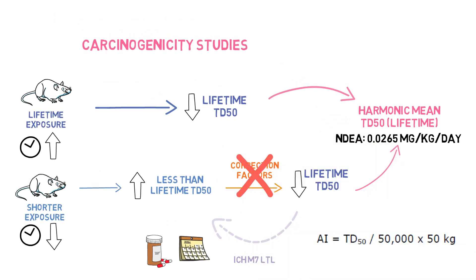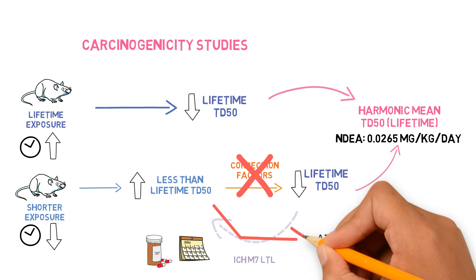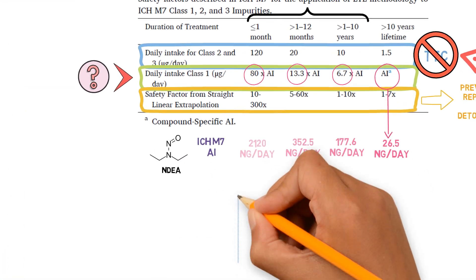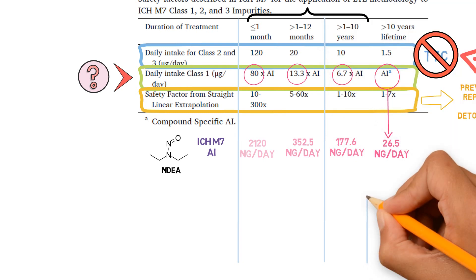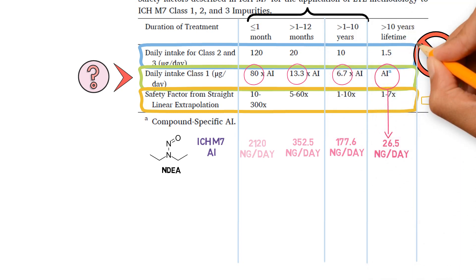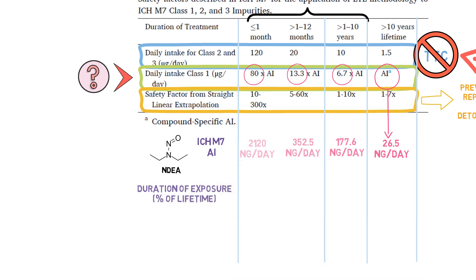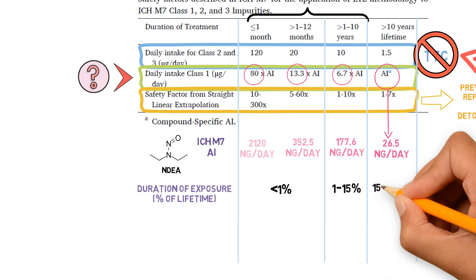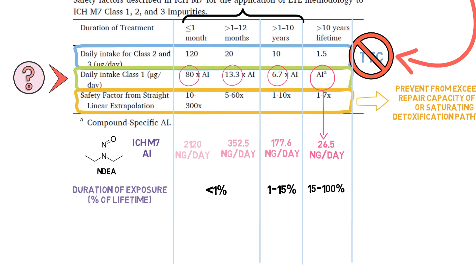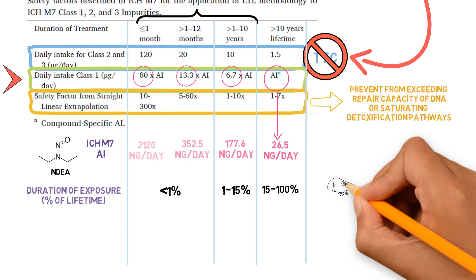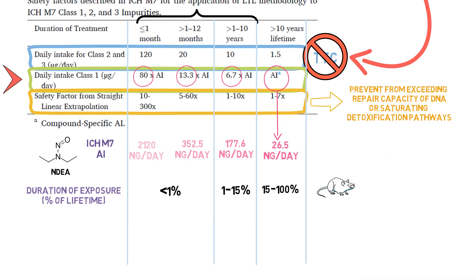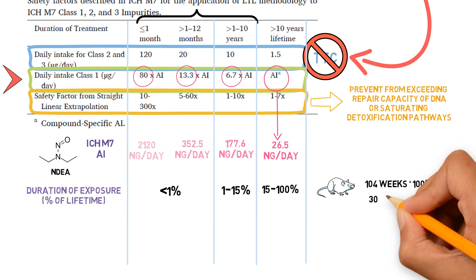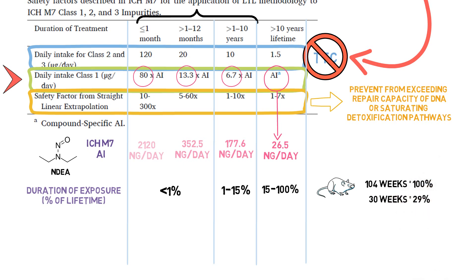What if we did not apply the correction factors and instead found the AI corresponding to each study which lasted less than a lifetime directly? This is what the authors did in that paper. The ICH M7 ranges of exposure correspond to a human life, but each of these ranges represents percentages of a lifetime: less than a year is less than one percent; one to ten years is one to fifteen percent; and more than ten years is more than fifteen percent. The studies performed with rats were fit into these categories based on what the exposure represented for the life of the rat — if the duration was 104 weeks, this is 100 percent of a lifetime, but if it was 30 weeks, for example, this corresponds to 29 percent of a lifetime.